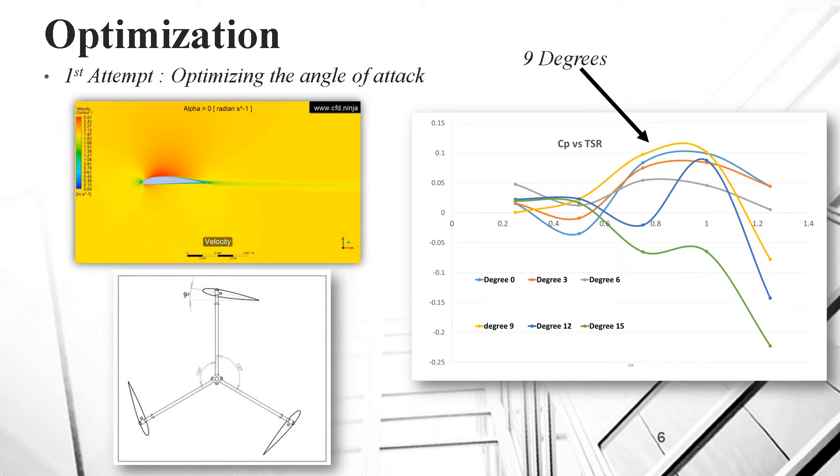As a first optimization attempt, our target was to fix the blades at an angle of attack which would give the optimum power. The angle of attack is actually the angle between the chord length of the blade and the relative motion of the fluid. After running multiple simulations from 0 to 15 degrees with increments of 3 degrees, it turned out that the optimum angle is 9 degrees as it can be seen on the graph. So from now on, our further optimization will be based on this fixed angle rather than the conventional 0 degree bladed turbine.